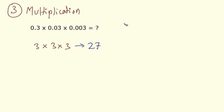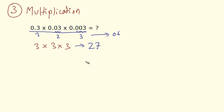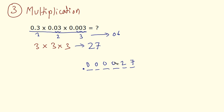To find that, let's count the digits after the decimal point in the question. In the first term, we have 1 digit after the decimal point. Here we have 2 digits after the decimal point. And here we have 3 digits after the decimal point. When we add these, 3 plus 2 is 5 plus 1 is 6. So, in the final answer there would be 6 digits after the decimal point. The last two are 2 and 7, and the remaining places would naturally be filled in with zeros. This is how you multiply any given decimal numbers.